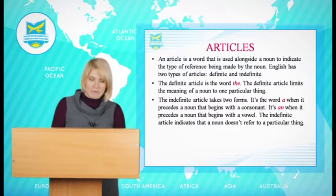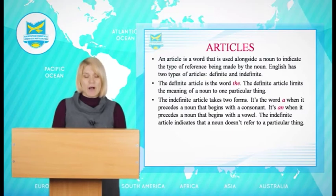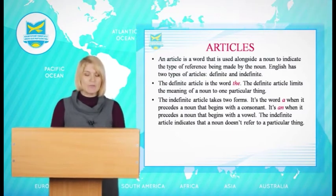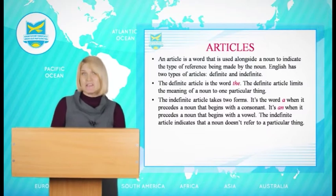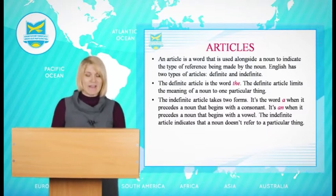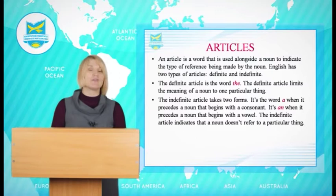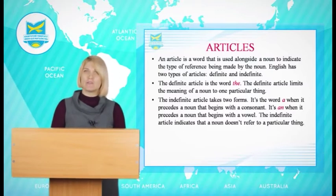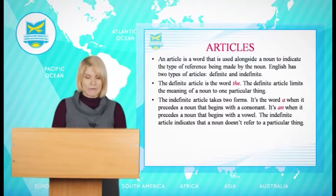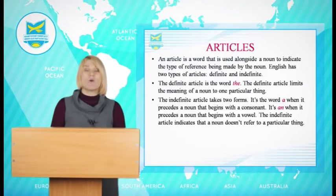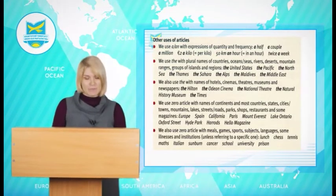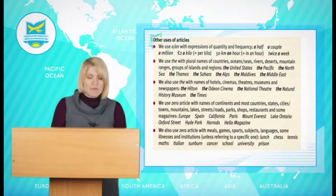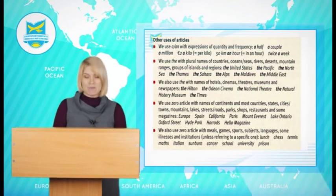Let's talk about general meaning. We use zero article plus plural countable noun or an uncountable noun to make generalizations. For example: I like cats better than dogs — here you see no article. Water contains oxygen. Modern life is stressful.